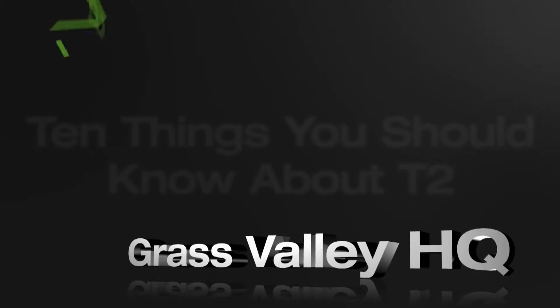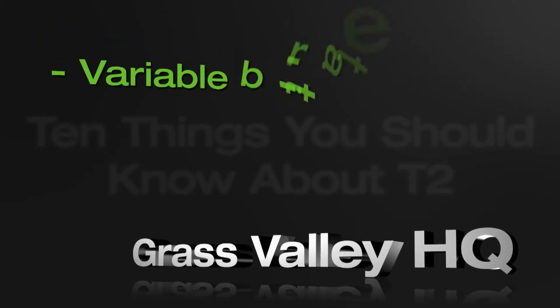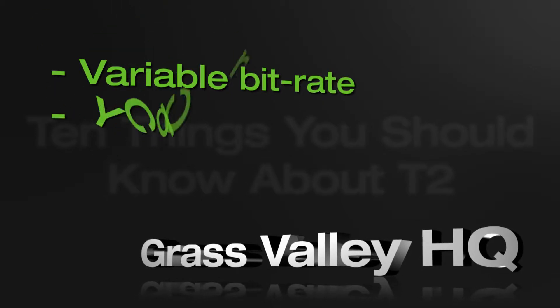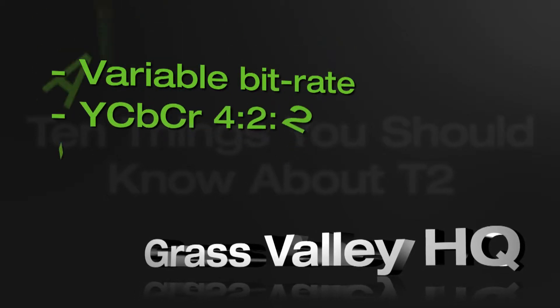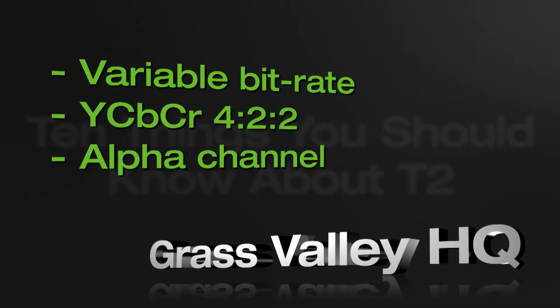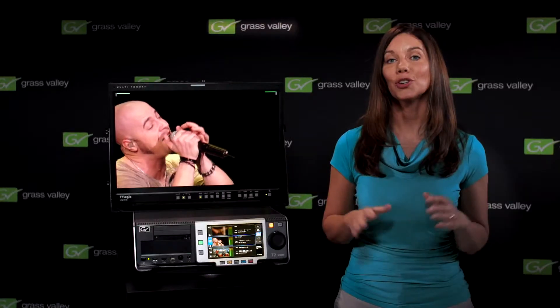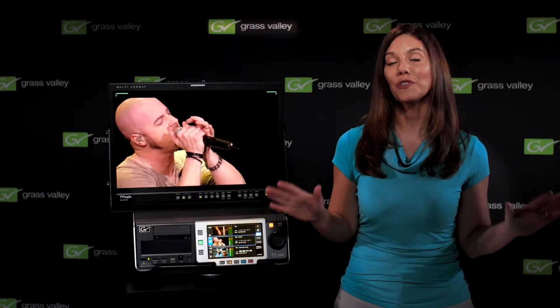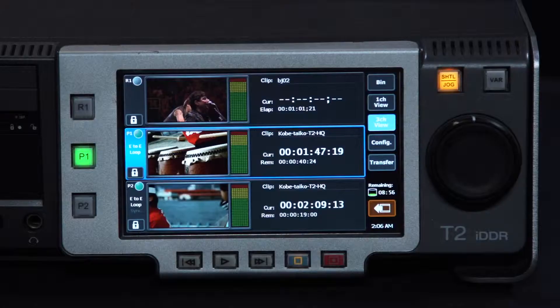To handle these and other formats, we've given the T2 the Grass Valley HQ codec. HQ is a variable bitrate 50 to 200 megabits per second 4:2:2 codec with alpha channel support for fast handling of graphics built in. It's a free download for both Windows and Mac platforms, so you can use it with your favorite graphics software or editor.